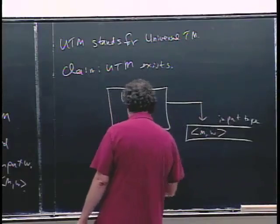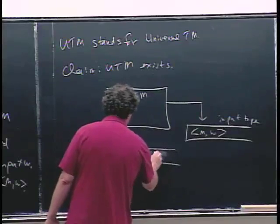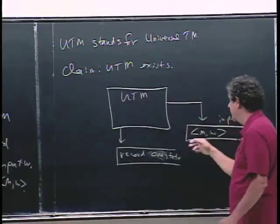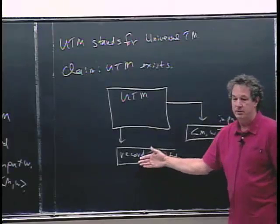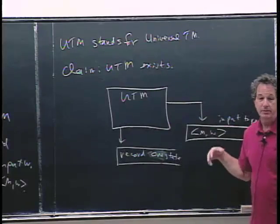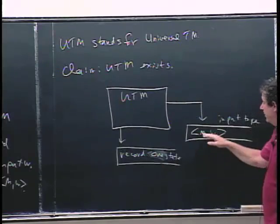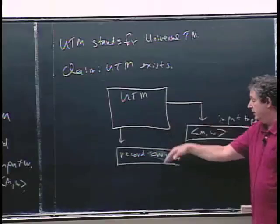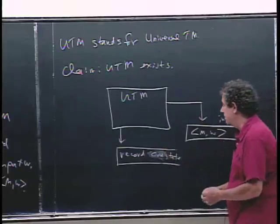I'm going to have a tape here that's going to record one state — basically the UTM is going to try to simulate what M does on input W, and I just want to be able to remember what state M is in during the simulation. M is being given input W, and if M was running it would be going through a series of states. In the simulation I just want to record what those states are — we can do that on a separate tape.